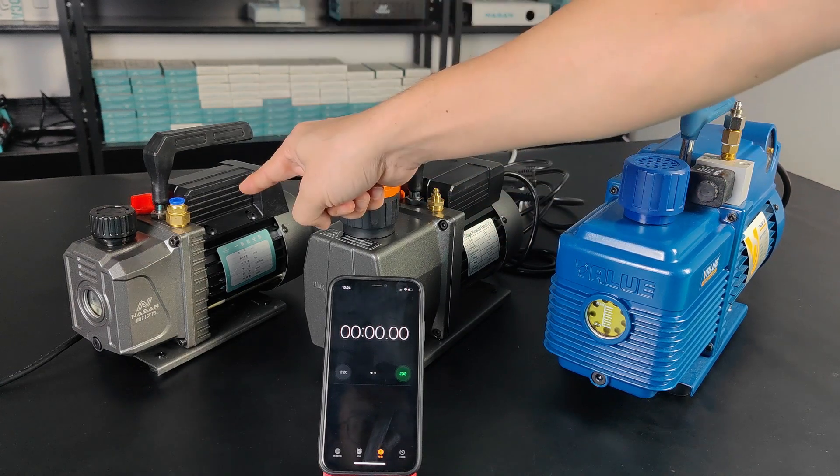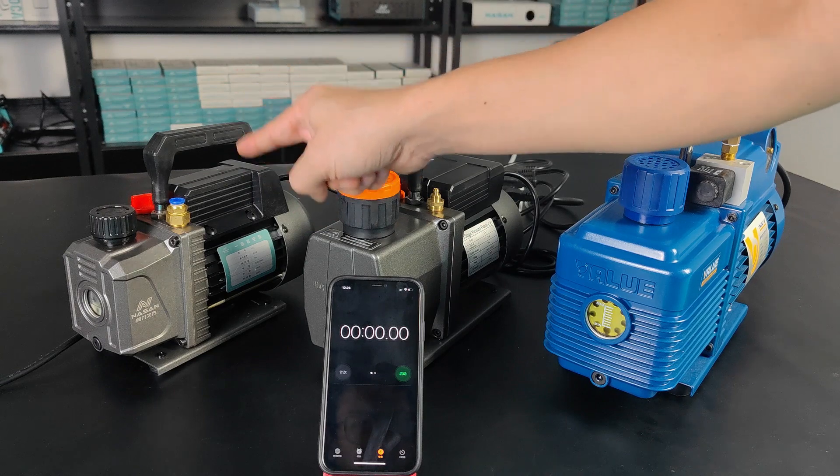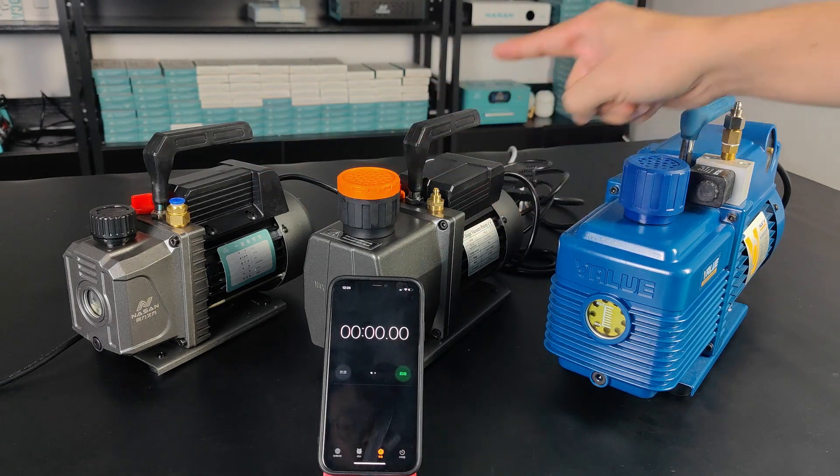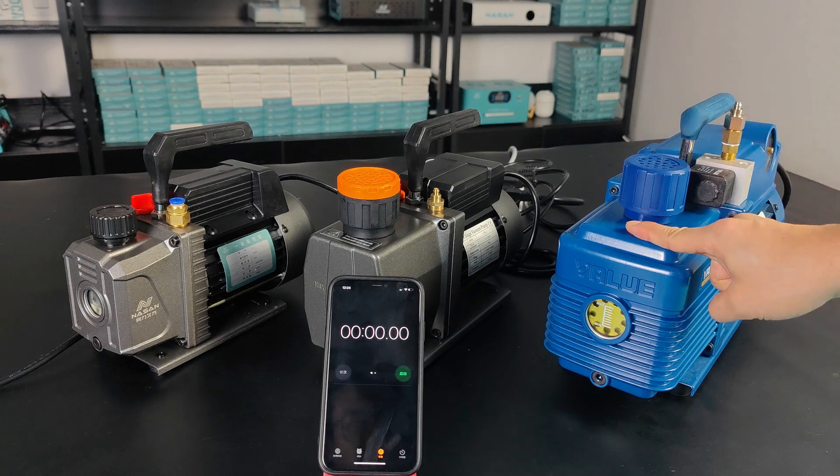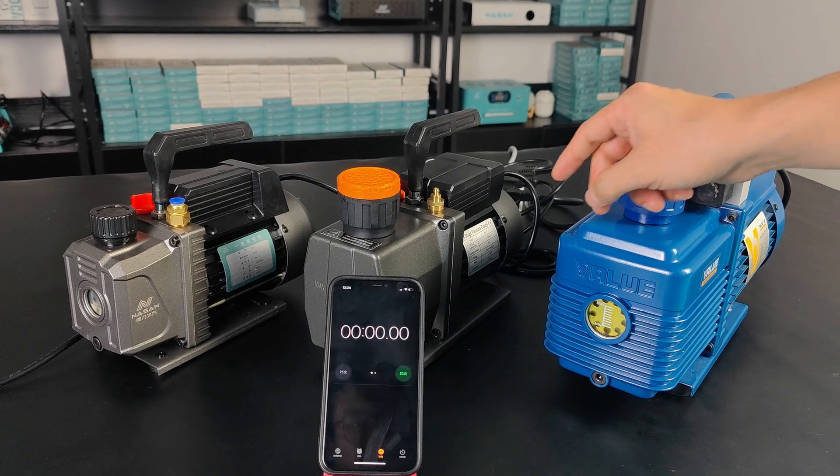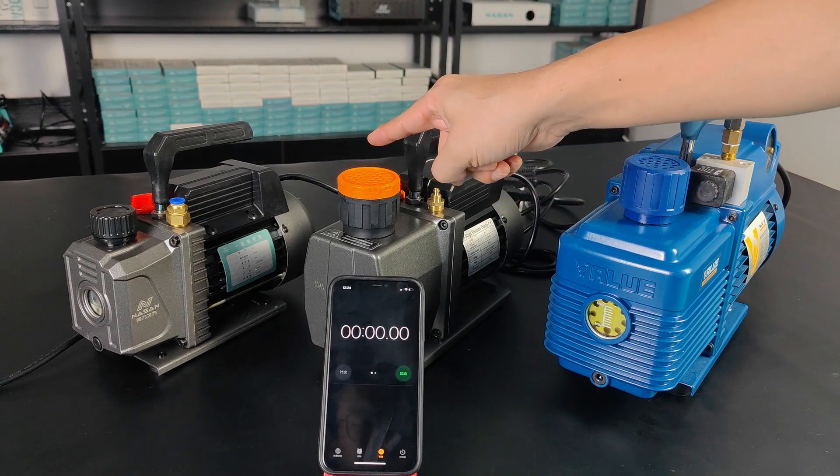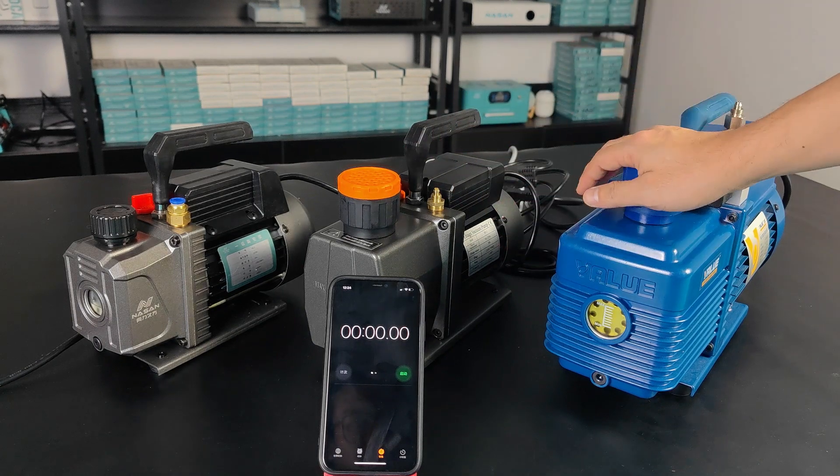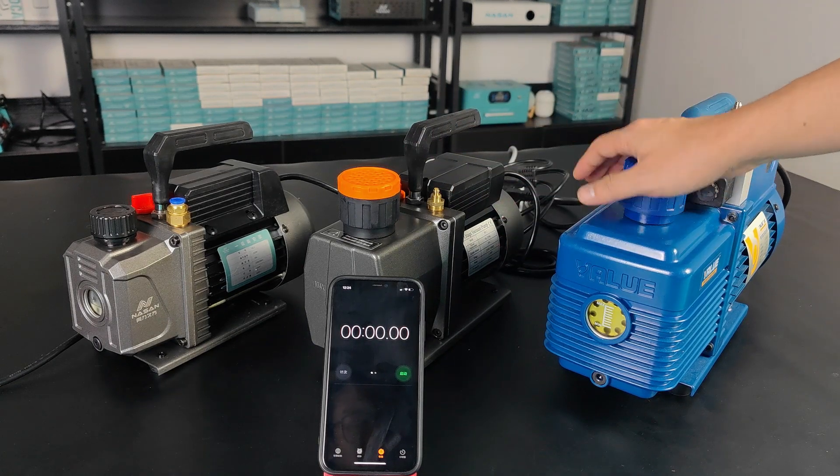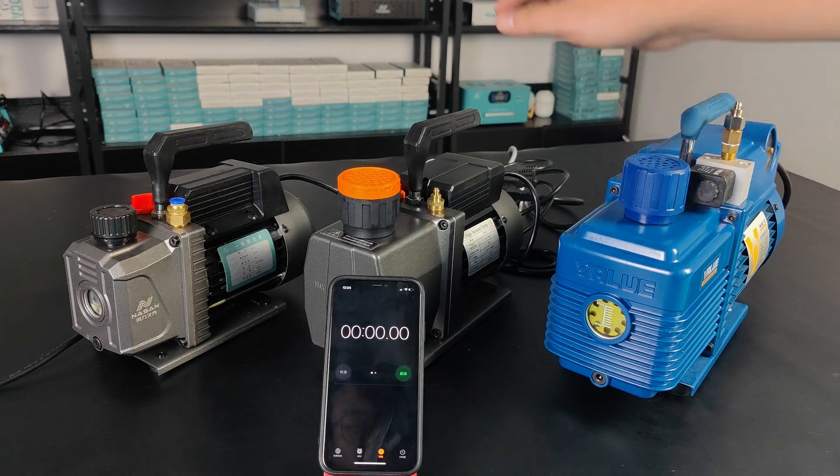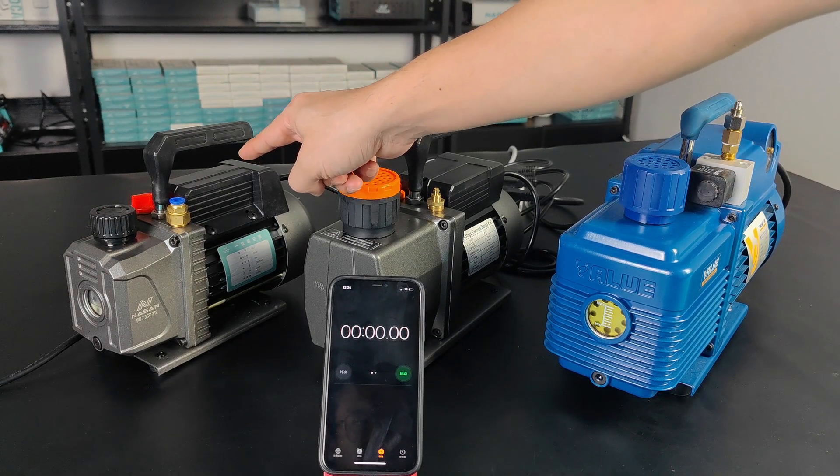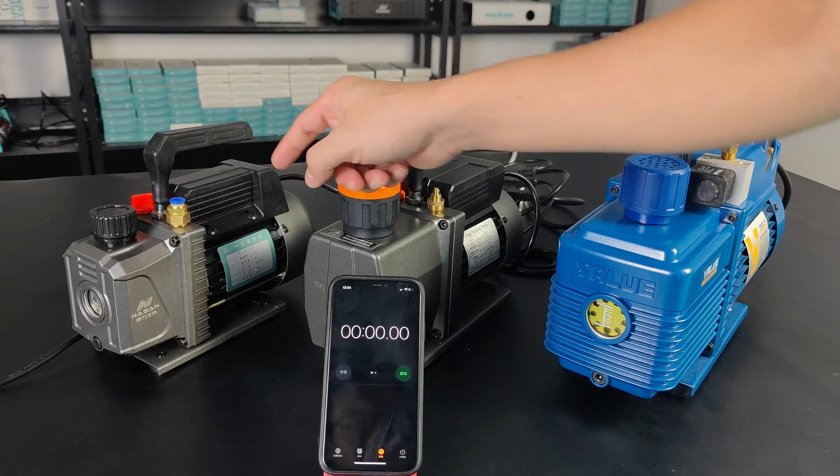For one liter, that means one liter per second. For two liter, that's two liters per second. Four liter is four liters per second. When you're selecting the vacuum pump, it depends on the chamber size of your laminator. If you have a big laminating chamber, you might need a bigger one. If you have a small vacuum chamber, you can select the small one.